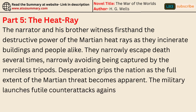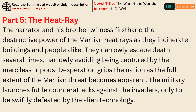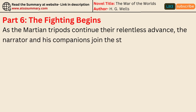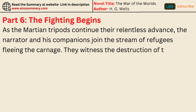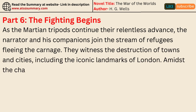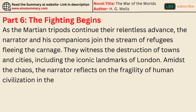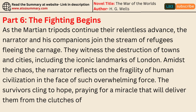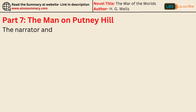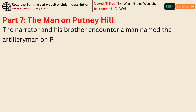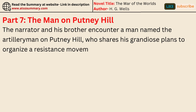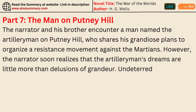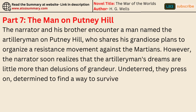The military launches futile counterattacks against the invaders, only to be swiftly defeated by the alien technology. As the Martian tripods continue their relentless advance, the narrator and his companions join the stream of refugees fleeing the carnage. They witness the destruction of towns and cities, including the iconic landmarks of London. The narrator reflects on the fragility of human civilization. The narrator and his brother encounter a man named the Artilleryman on Putney Hill, who shares his grandiose plans to organize a resistance movement against the Martians. However, the narrator soon realizes that the Artilleryman's dreams are little more than delusions of grandeur. Undeterred, they press on, determined to find a way to survive in this new, hostile world.